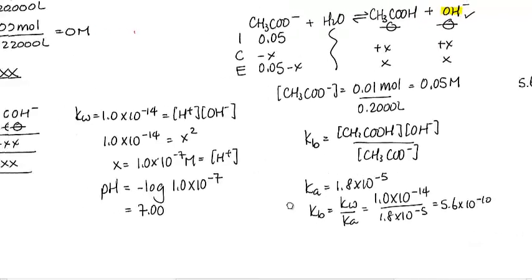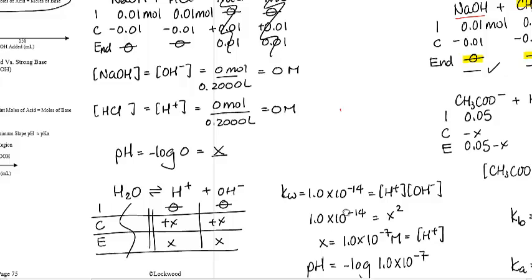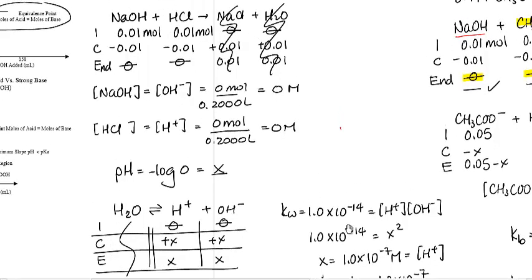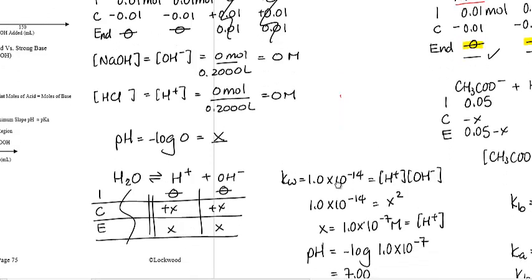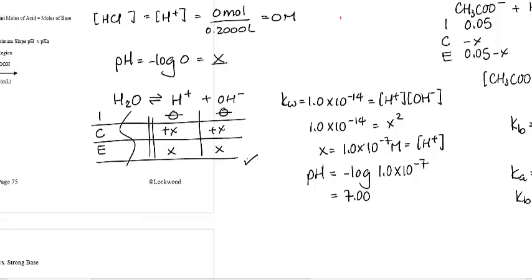In contrast, when we take a look at the strong acid, strong base, you'll see that because there is no equilibrium from the conjugate base or even the conjugate acid, what you have is you have the equilibrium from water right over here. And because the water's equilibrium constant is 1.0 times 10 to the minus 14, when you take the square root and you find the pH, you now end up with a pH of 7.